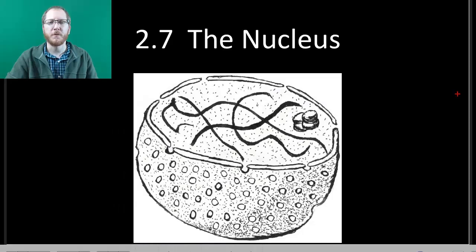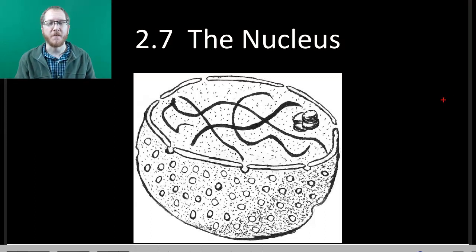Welcome to chapter 2.7 where we're going to cover the nucleus. So the nucleus is going to be found only in eukaryotic cells. You will not find this in prokaryotic by definition.